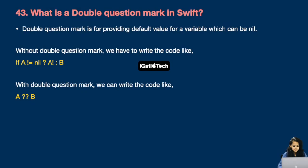Next question: what is the double question mark (??) in Swift? The double question mark provides a default value for a variable that can be nil. Without it, you'd write: if a != nil { use a! } else { use b } — that's the ternary form. With the nil-coalescing operator, you simply write a ?? b. If a is nil, it will automatically take the value of b, which is the default.